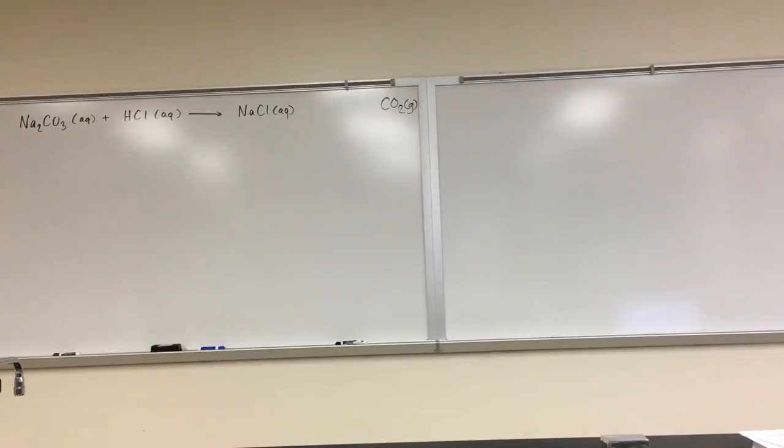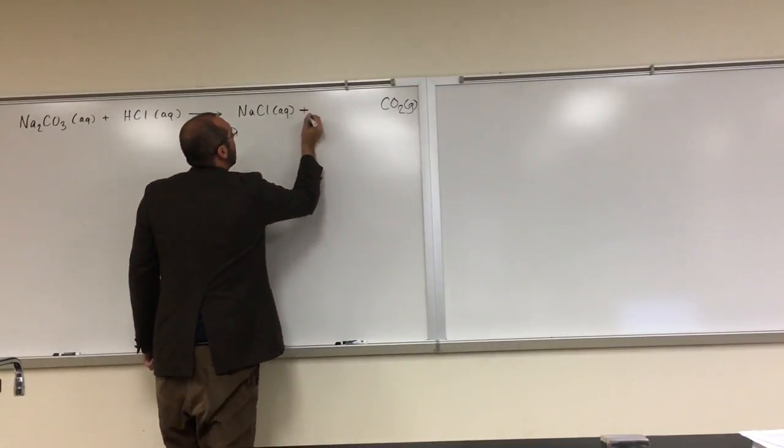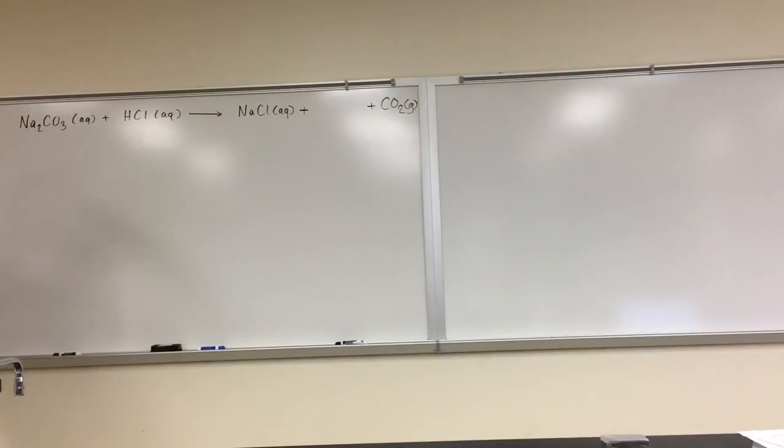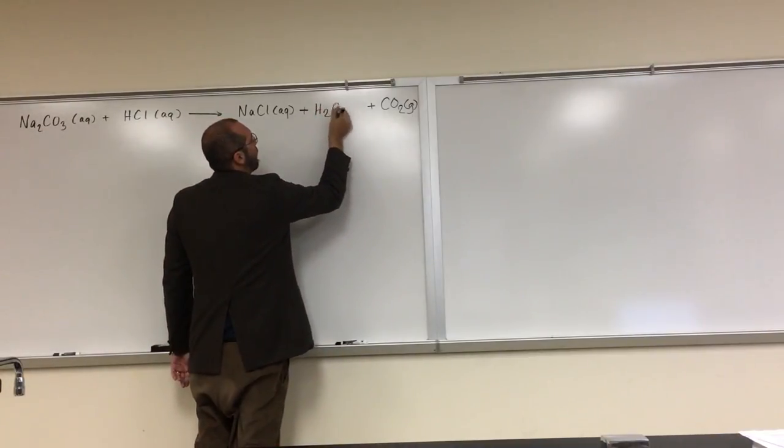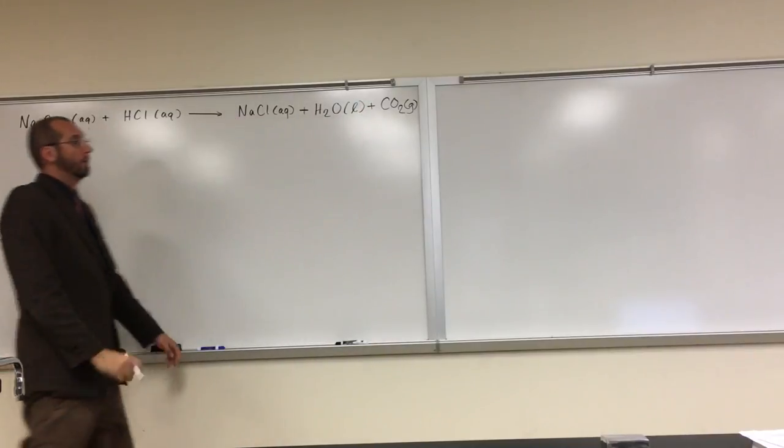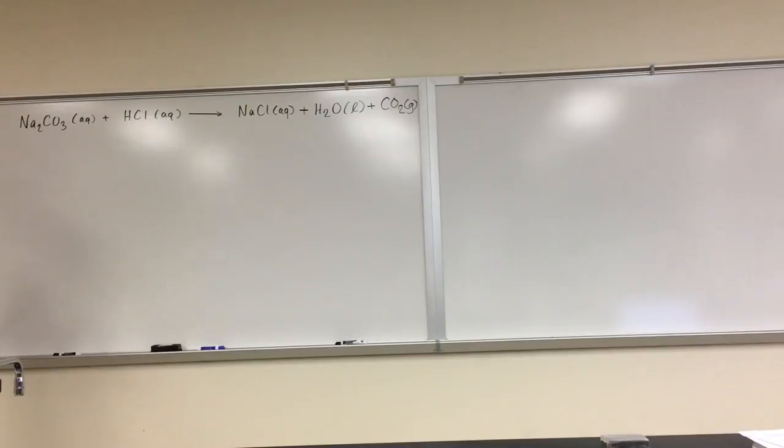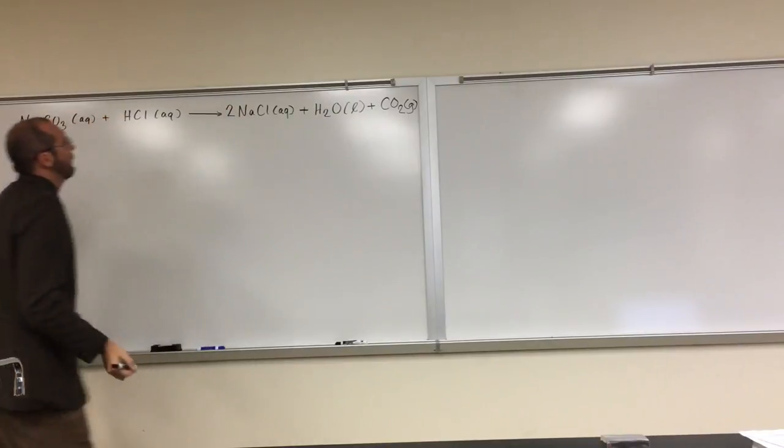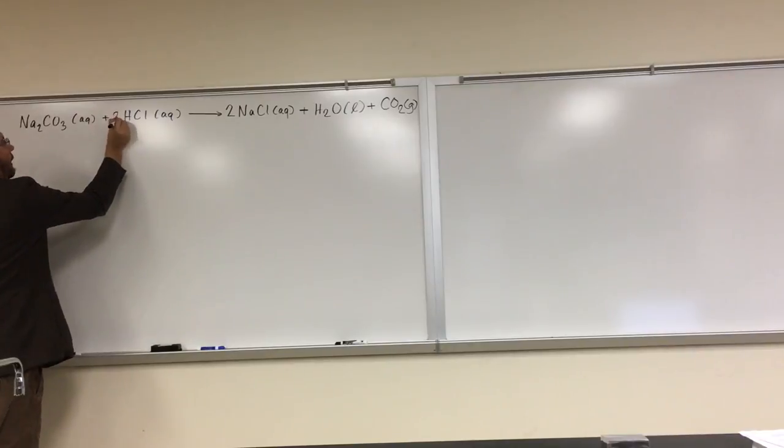So we can start balancing this to figure out what else we have left that we're going to need. We got H's and O's, right? So what was going to be the other molecule that we're going to be formed? H2O. H2O. There we go. And that's going to be a liquid. So now what do we have to do? Balance the equation, right? So do you see that we're not balanced, because we got two sodiums here, but only one here. So if we put two there, two chlorines, well, we're going to have to put two there.